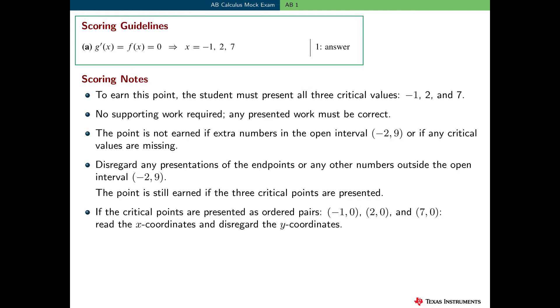Part a was worth one point, and the student earns this point for presenting the three critical values. Here are some scoring notes or interpretations of the scoring guidelines. First, to earn this point, the student must present all three critical values. Just two of the three, and the student does not earn the point. There is no partial credit here, or part of a point.